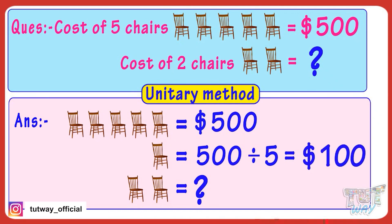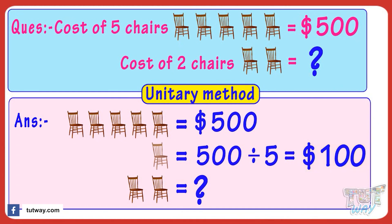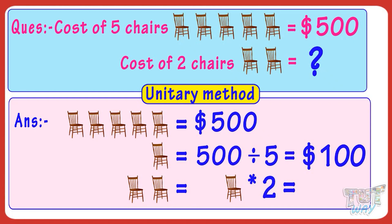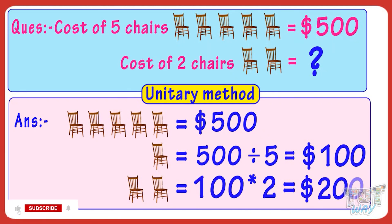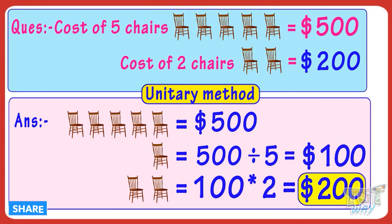So kids, we have calculated the cost of one chair. Now calculating the cost of two chairs is easy — multiply the cost of one chair by two. 100 multiplied by two gives us 200. So the cost of two chairs is $200.